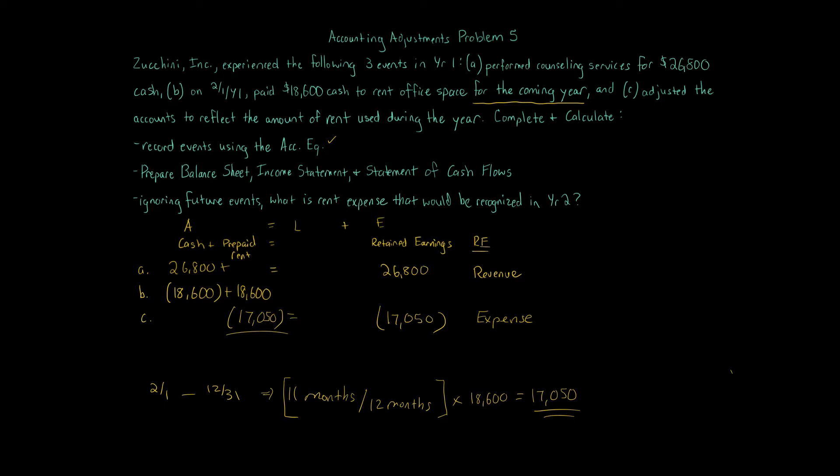Now notice if we look at our balances in cash, prepaid rent, liabilities are zero, retained earnings, cash with a balance of $8,200, prepaid rent, we have a balance of $1,550. Now if we take one month over 12 months and multiply that by $18,600, go ahead and do that. What number do you get? You got it, $1,550. Because the idea is that next month, that $1,550 that's attributable to one month, that's going to be January of year two.